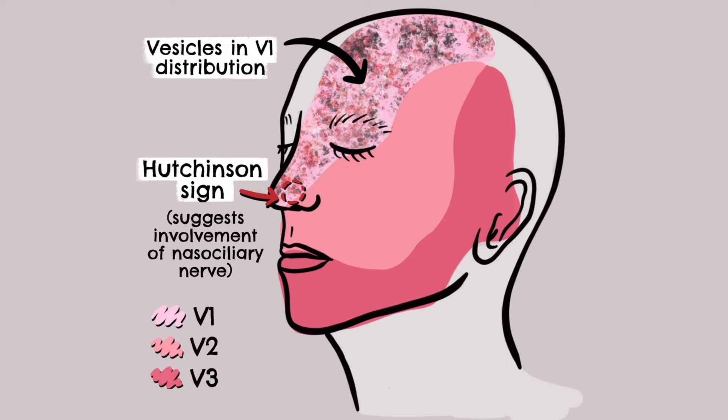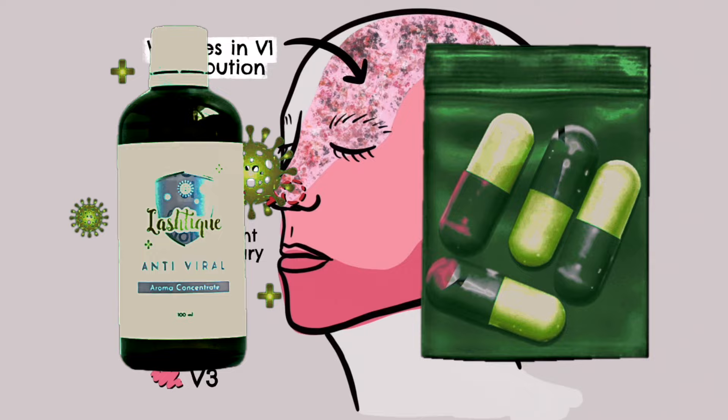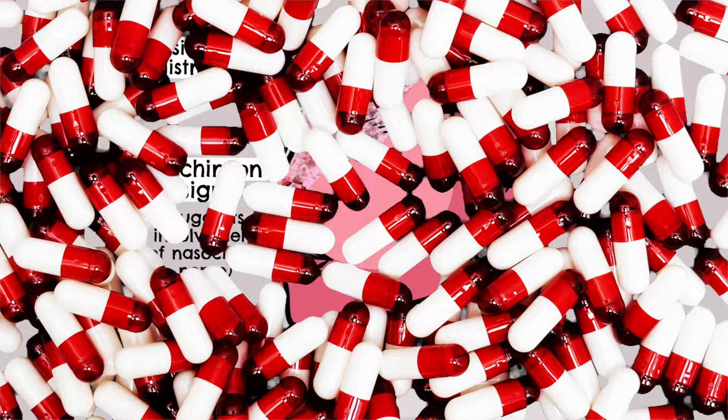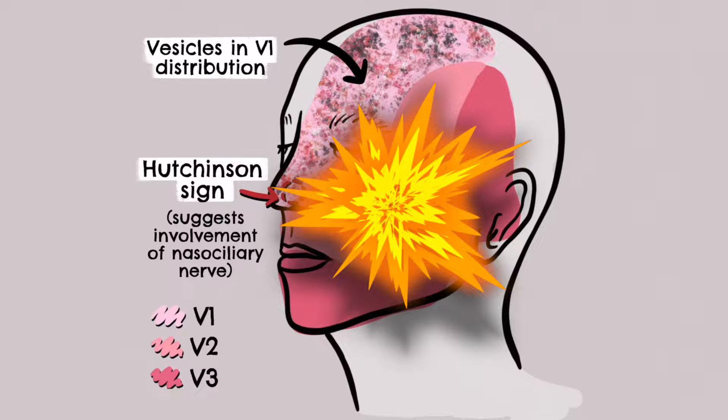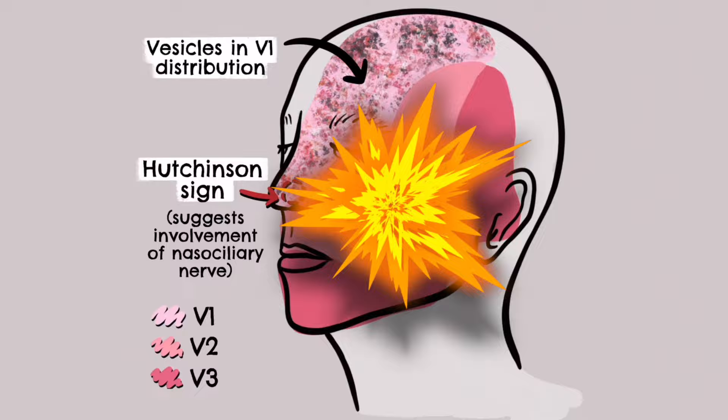Treatment of herpes zoster ophthalmicus can be provided by oral antivirals and sometimes topical corticosteroids. To prevent herpes zoster ophthalmicus, the recombinant herpes zoster vaccine is recommended for immunocompetent adults older than 50. This recombinant vaccine decreases the chance of developing herpes zoster ophthalmicus by over 90%.